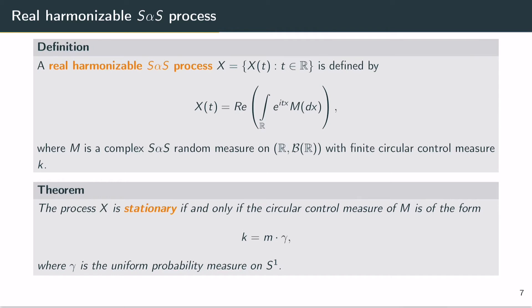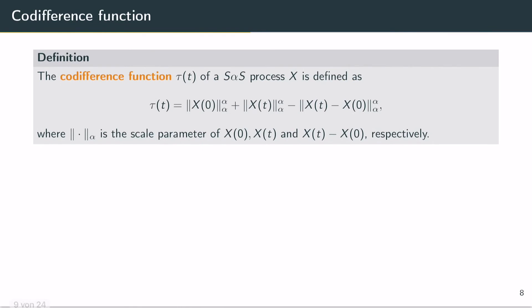So how do we do this, and why is the alpha sine transform an important key player in this problem? We consider the codifference function tau of a symmetric alpha stable process X, which is defined by this formula here, where the norm with respect to alpha is simply the scale parameter of the random variables X0, Xt, and Xt minus X0. This codifference function is a generalization of the covariance function, since in the alpha stable case we do not have second moments if alpha is less than 2.